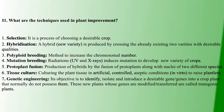Next question: what are the techniques used in plant improvement? For plant improvement, we don't need to elaborate deeply, but we should know the names of the methods. First is selection — selecting desirable crops. Second is hybridization — to produce a new variety. Third is polyploid breeding — increasing chromosomal number. Fourth is mutation breeding — using radiations to cause changes and produce new crop varieties.